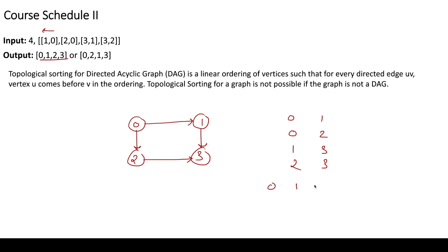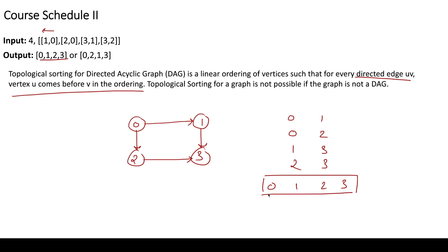Now consider the ordering 0, 1, 2, 3. According to the definition of topological sorting, for every directed edge u → v, u should come before v. Checking all edges: for 0→1, zero comes before one; for 0→2, zero comes before two; for 1→3, one comes before three; for 2→3, two comes before three. So this ordering is indeed the topological sort for the current graph.